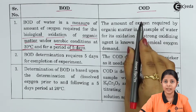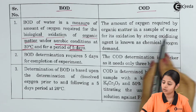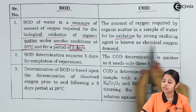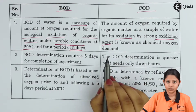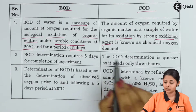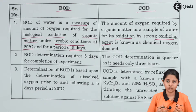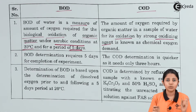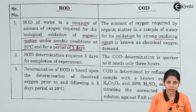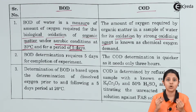Similarly we have COD, Chemical Oxygen Demand. COD is the amount of oxygen required by organic matter in a sample of water for its oxidation by strong oxidizing agents. Now there are two terms we need to understand. The first term is oxidation — oxidation is a reaction in which addition of oxygen takes place. For example, zinc (Zn) becomes zinc oxide (ZnO): addition of oxygen took place, oxygen got added to the zinc to form zinc oxide. This entire process is known as oxidation.